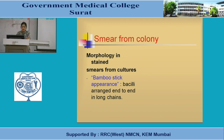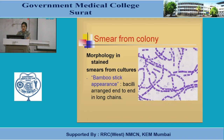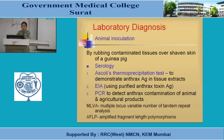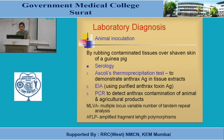After obtaining colonies, a smear is prepared from the colony and Gram stained, revealing the bamboo stick appearance of the bacilli. Animal inoculation, previously done by rubbing contaminated tissue over shaved skin of a guinea pig, is no longer used for diagnostic purposes. The guinea pig would produce disease similar to that in humans, demonstrating pathogenicity.